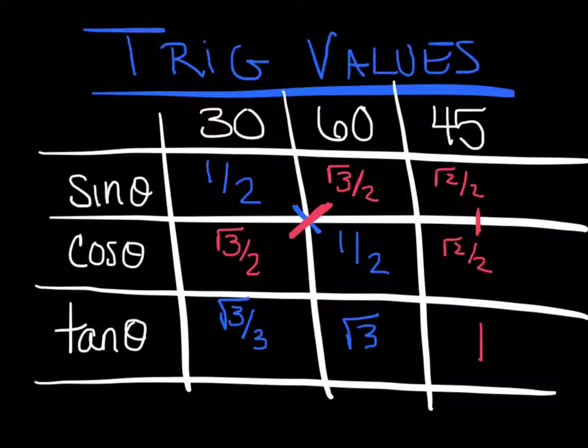Now that might seem odd to you, but remember, tangent is really the sine over the cosine. And the sine of 45 is radical 2 over 2, divided by radical 2 over 2 is 1. So make sure you know these nine values. We're going to use them inside and out every single day of the year.